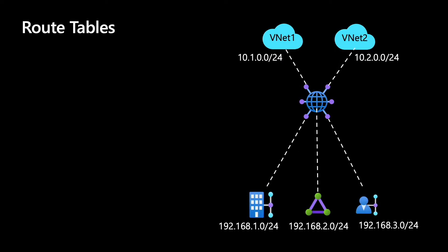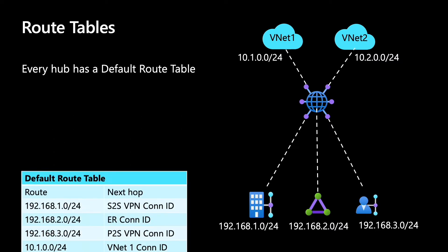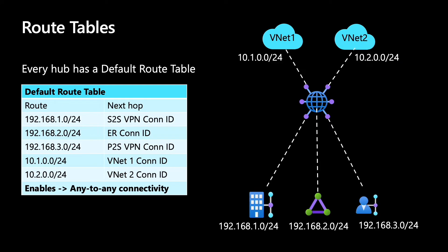Speaking of route tables, we have the same picture here — two VNets and three on-prem endpoints. Every hub has a default route table. The default route table is basically a route table with a bunch of routes and next hops. Let's understand the concept of a default route table. If we have five hubs, each one of those hubs is going to have a default route table.